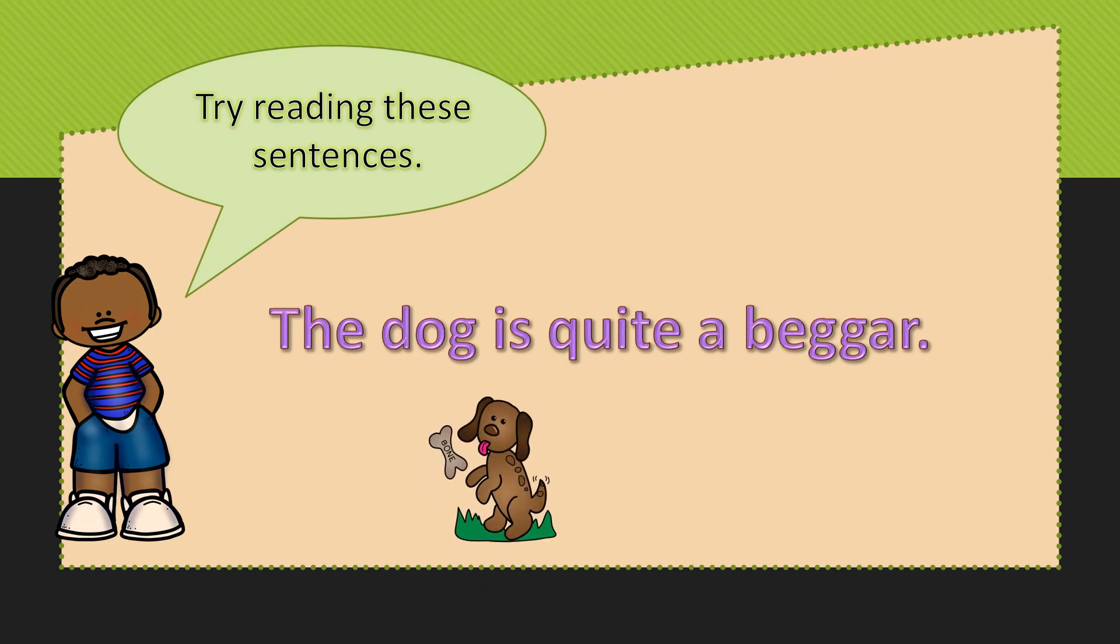Here we have the word beggar. Beg is the base word. A-R is the suffix. It's a vowel suffix and beg is a one one one word. So we double the G and add A-R. It is saying er. This sentence says the dog is quite a beggar.